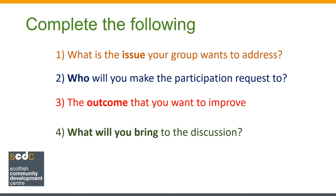The last question in our simplified participation request form asks what your group will bring to the discussion. When answering this question, think about your knowledge and expertise that comes from your lived experience of the service. Think about your reach into your community, and what other skills and experience your group has in relation to the outcome. In the real form, you'll be asked at least three separate questions on why you should be involved and what you will bring, but your answers should cover much of the same things. A good tip is to avoid tripping yourself up by trying to show that you already know how to improve the outcome. Instead, by focusing on your important perspective based on lived experience, you can simply show that you have a legitimate voice that should be listened to as part of the dialogue.